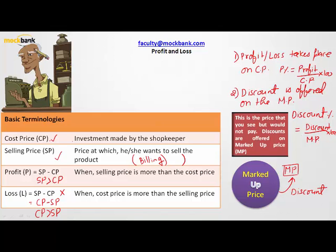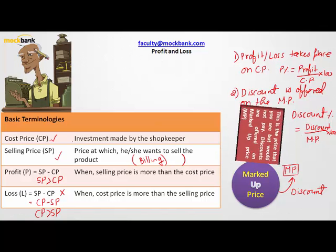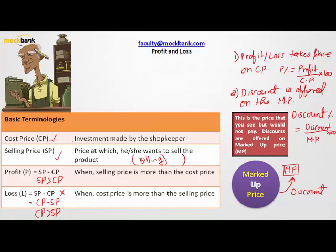Two very important learnings: profit and loss percent are calculated only on cost price, and discount is offered on the marked price. Selling price is nothing but the billing price. I hope you're understanding this.